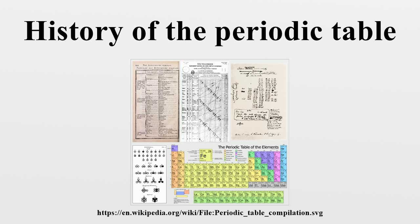De Chancourtois saw that elements with similar properties lined up vertically. His 1863 publication included a chart, but his original paper in the Comptes Rendus de l'Académie des Sciences used geological rather than chemical terms and did not include a diagram. As a result, de Chancourtois's ideas received little attention until after the work of Dmitri Mendeleev had been publicized.